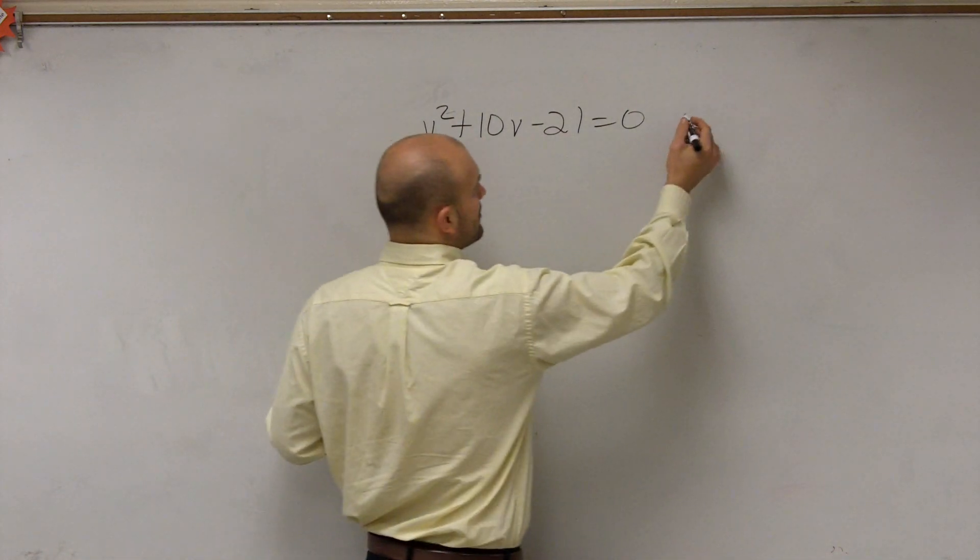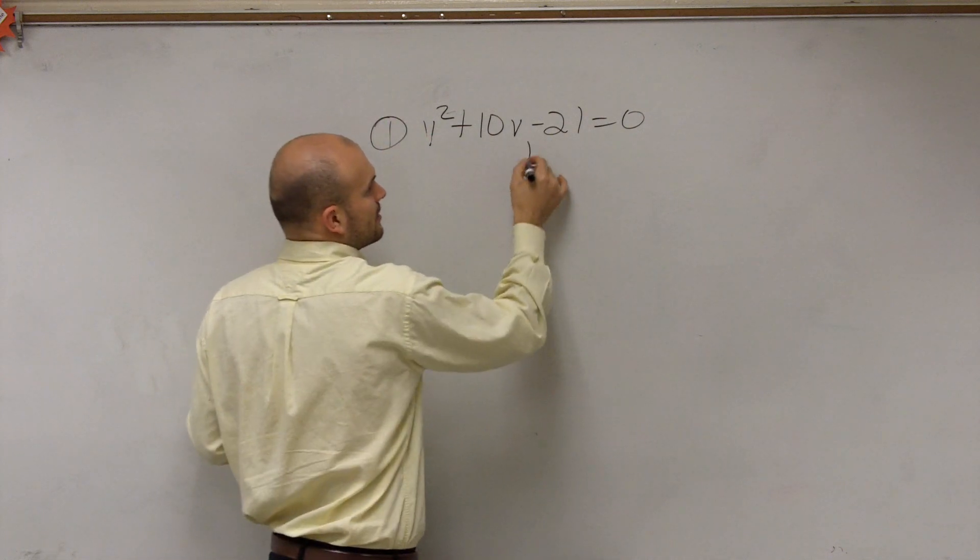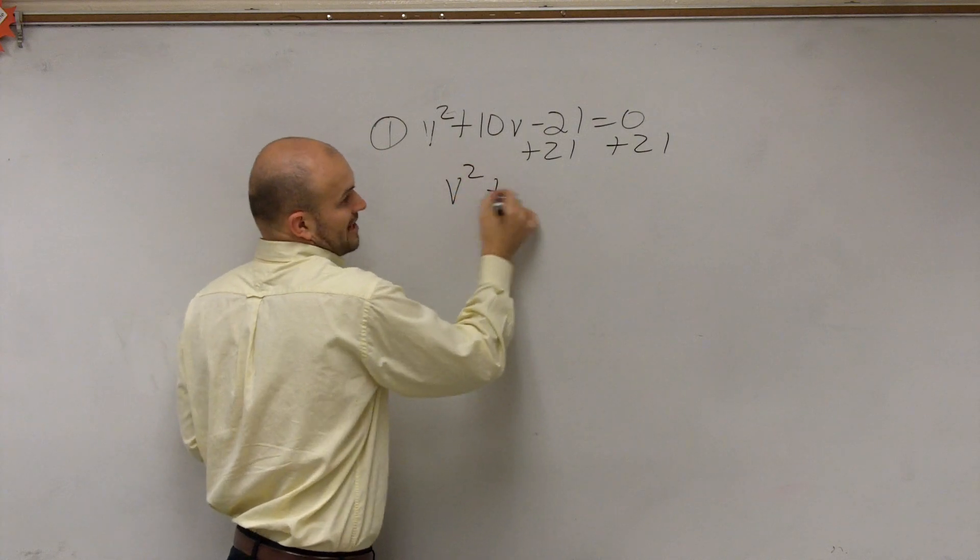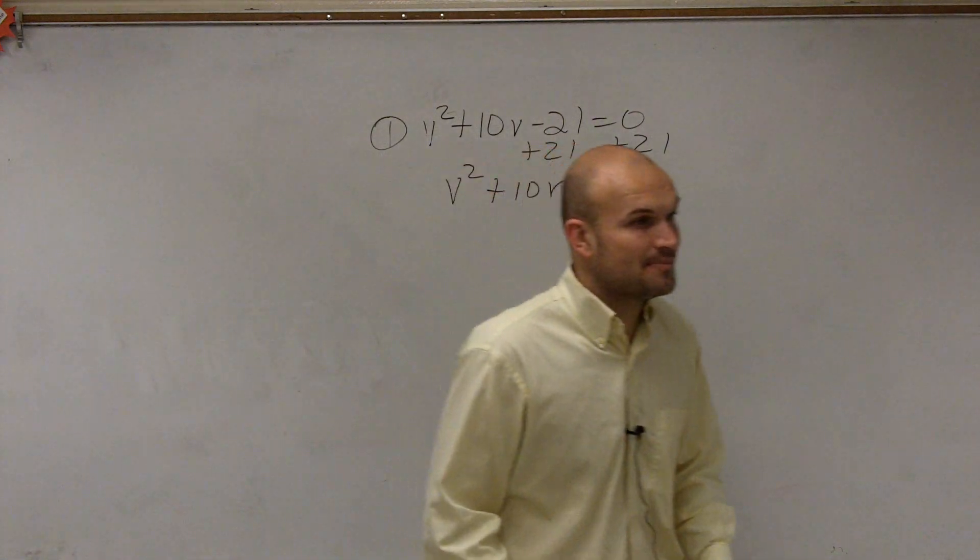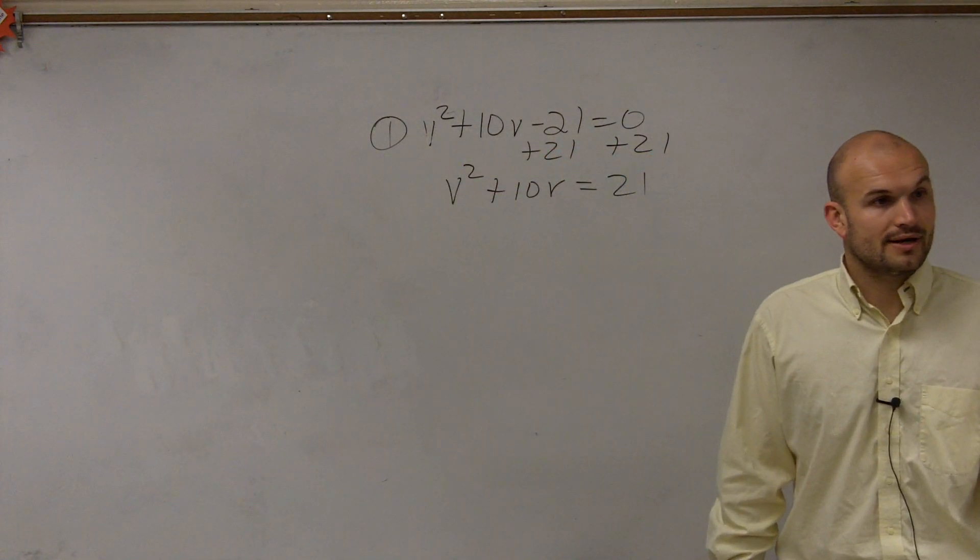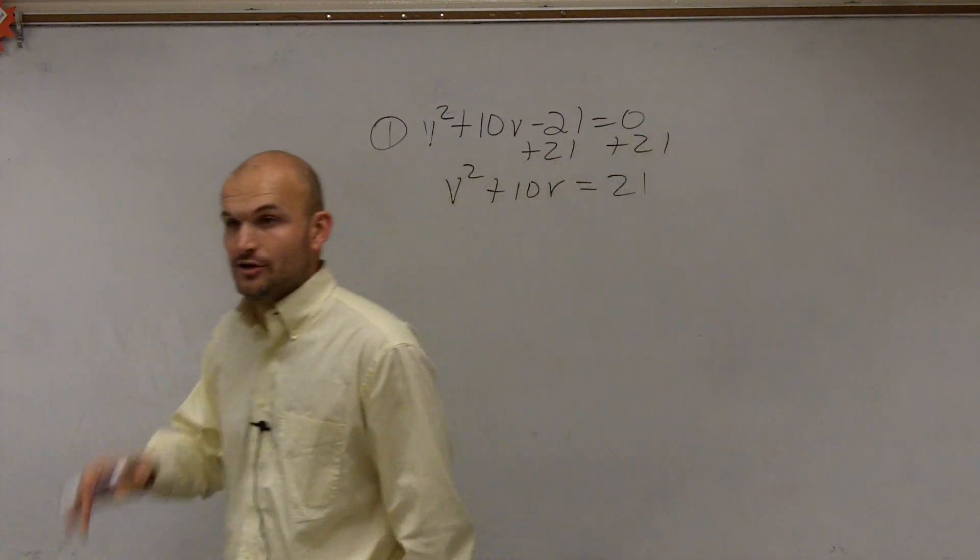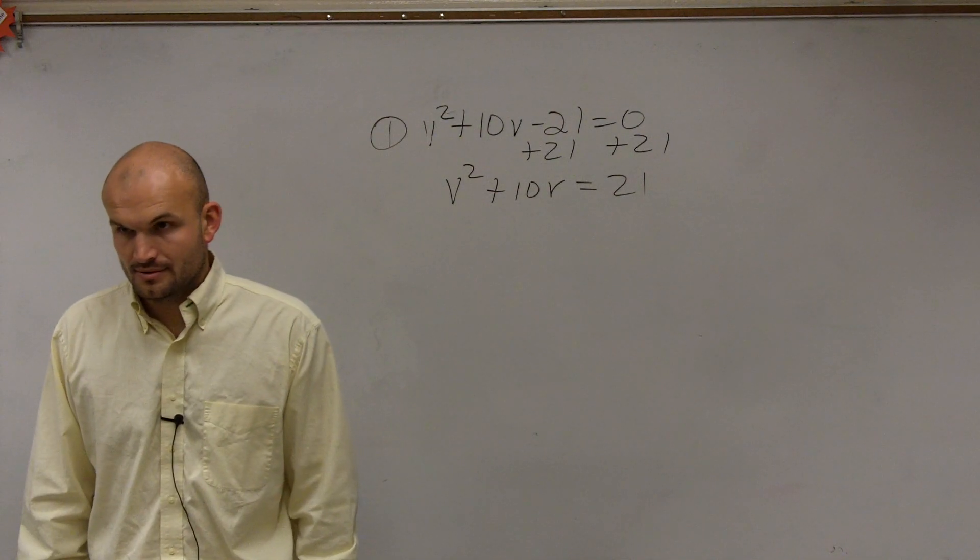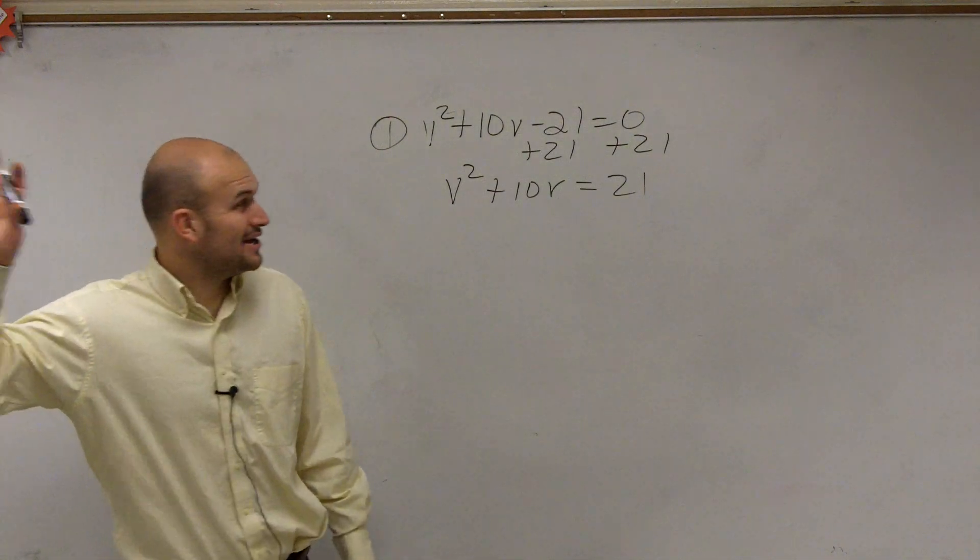So completing the square, step number one: get your variables isolated. Anna came up with this one last time, and it must be a very common step or very obvious step for you guys to work into, all right? Just add 21 to the other side. Isolate your variables. We can do this for every single problem, right? Yeah, I know, I got that going through.